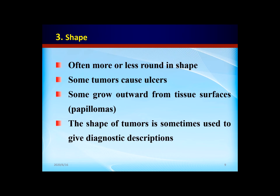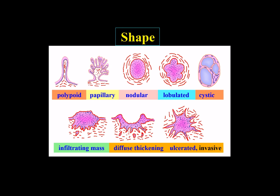Shape. Tumors are often more or less round in shape. Some tumors will show ulcerative appearance or polypoid-like. The shape of a tumor is sometimes used to give a diagnostic description. We can find many shapes: polypoid, papillary, nodular, lobulated, cystic, infiltrating, and ulcerative.